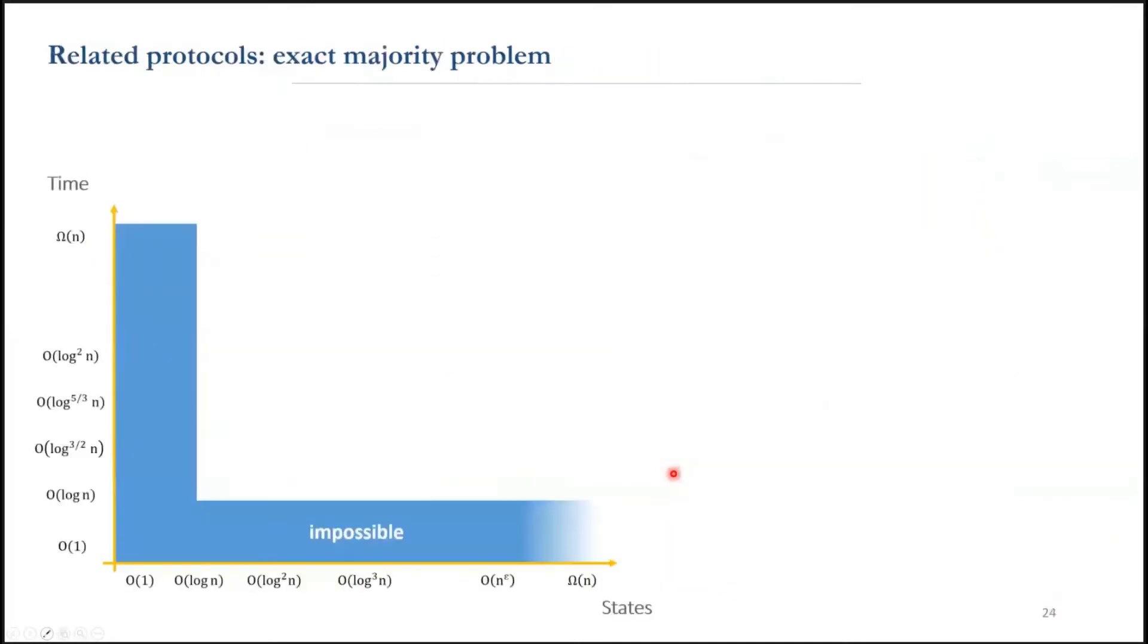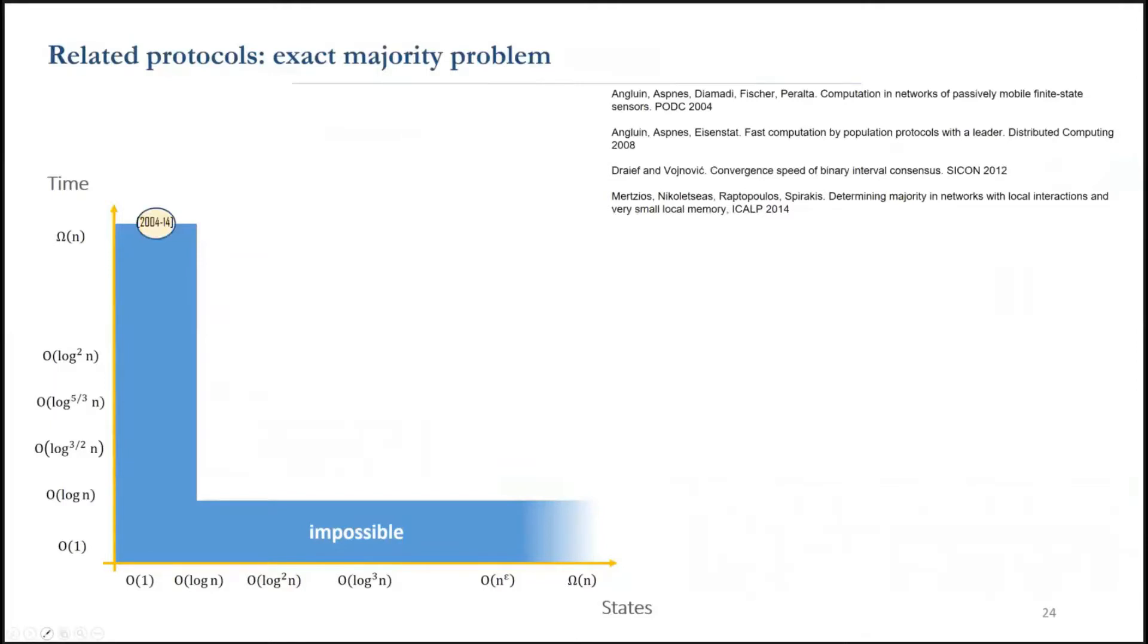Since 2004, many researchers have considered the majority problem in population protocols. In this chart, the x-axis shows the state complexity, the y-axis shows the time complexity, and the blue area represents the impossible region.